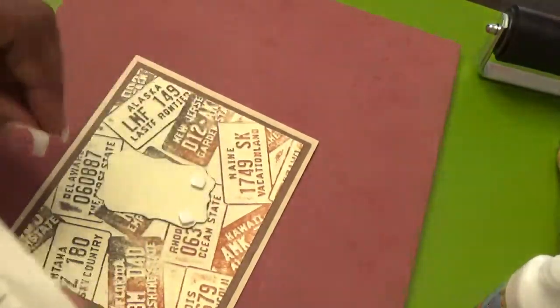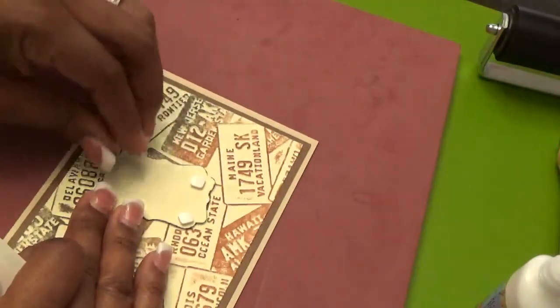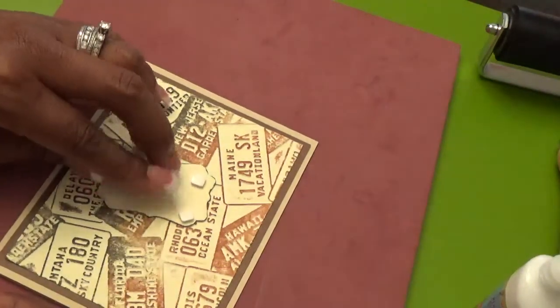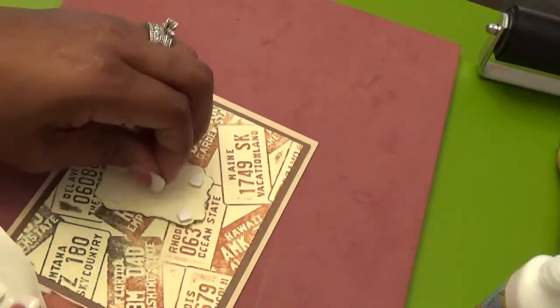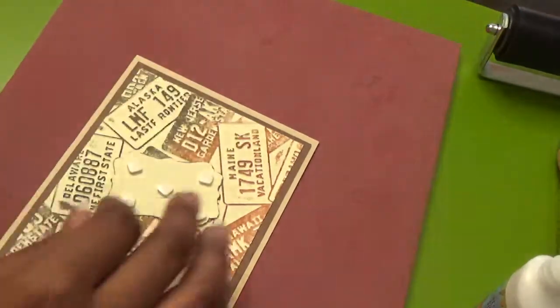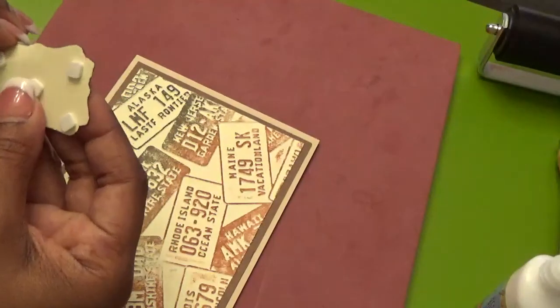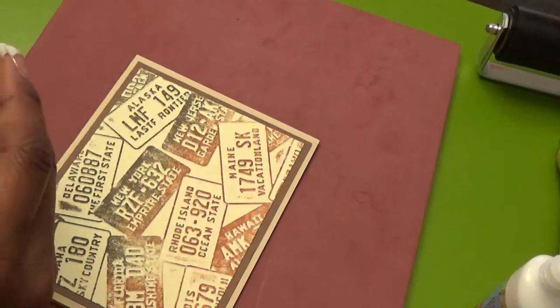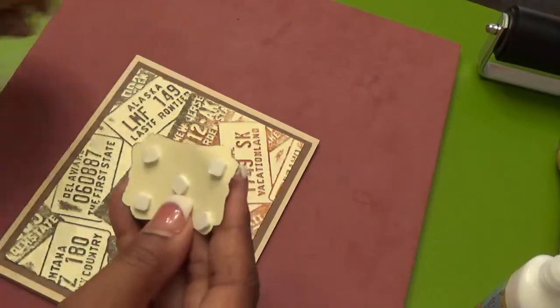And we're almost done with our little card here. And like I said, very easy. It doesn't take that much time. The most time is picking out your sentiment and which embossing folder and your colors. And of course, that's what always takes me the longest. We got our little pop dots. And of course, the paper doesn't want to come off when I need it to come off.